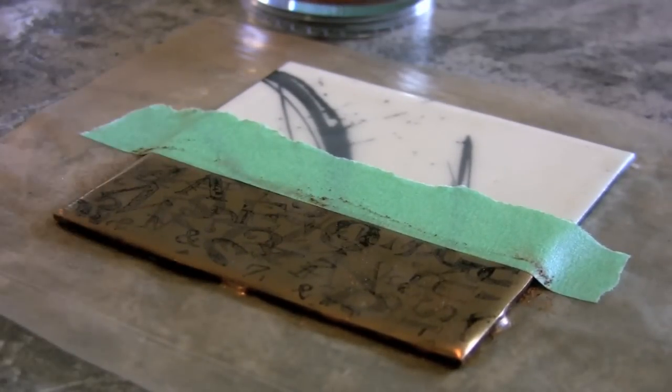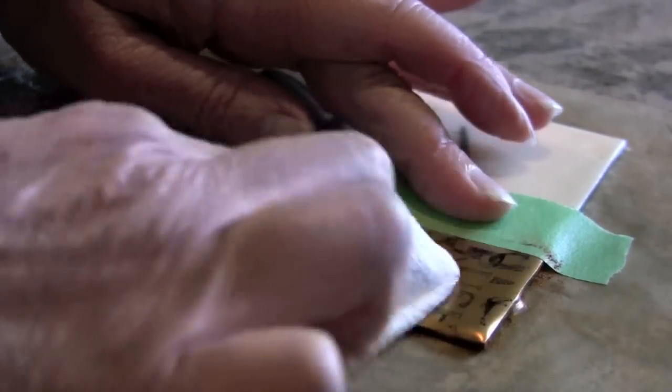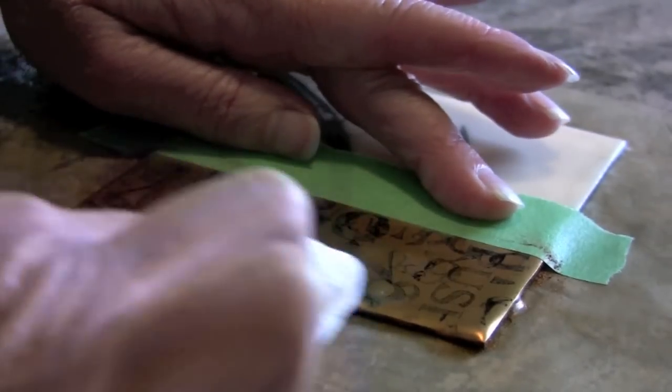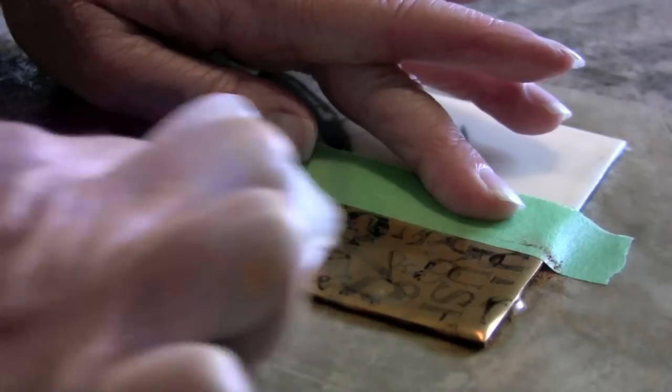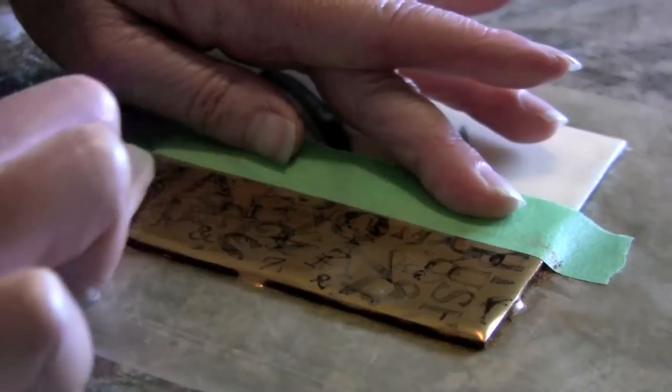After I've done the first burnish, and hopefully you noticed I was quite attentive to the edges, I'm now using a soft paper towel, or you can use a rag or a cloth, and wrapping it around my finger I'm further burnishing that metallic powder so it's actually bonding right into the surface of the wax.